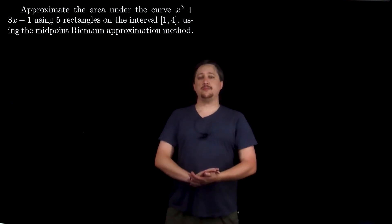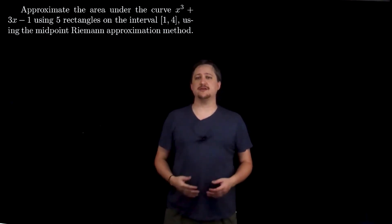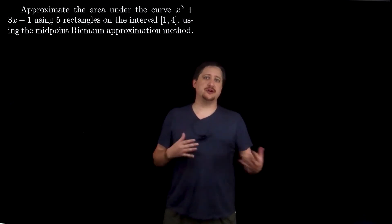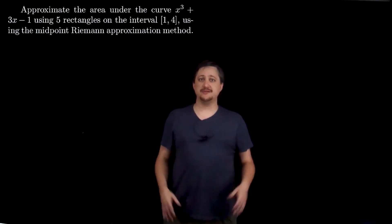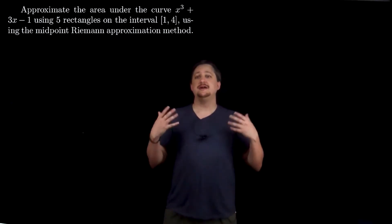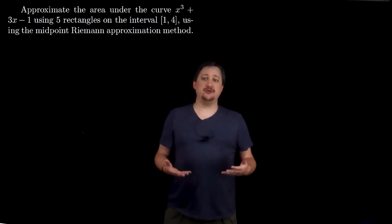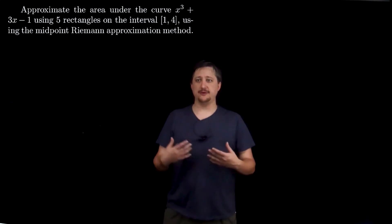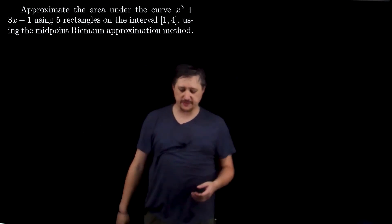In this example, we're finding the area under the curve using Riemann approximation of the function x cubed plus 3x minus 1 — which, depending on the order, you probably have seen once or twice with right and left endpoints. Same setup: five rectangles, same function, same interval one to four, but now we're using the midpoint Riemann approximation.